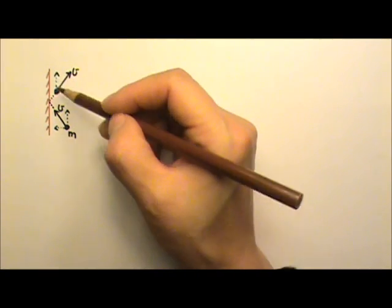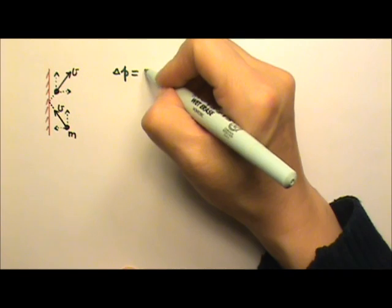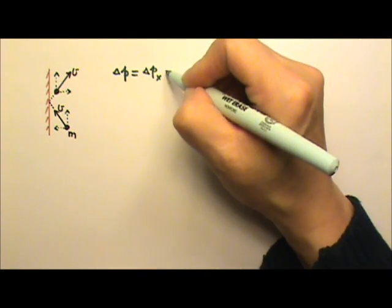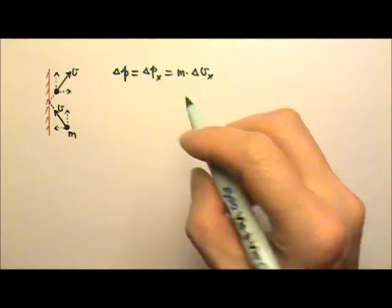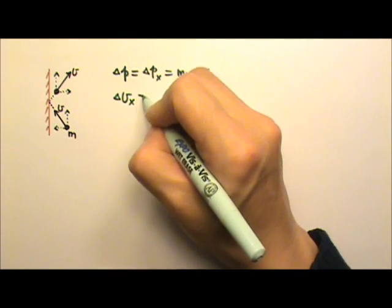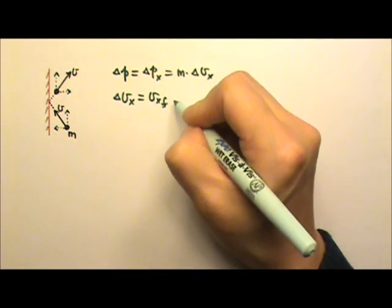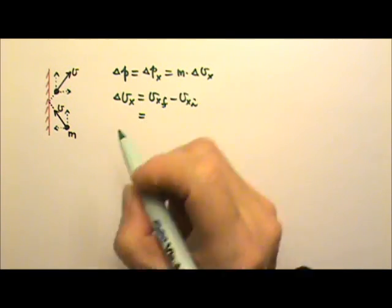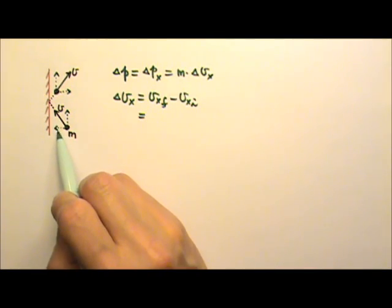There's no momentum change in the y direction. So the changing momentum of the molecule is the changing momentum in the x direction, which is m times delta v's x component. And the changing velocity in the x direction would be vx final minus vx initial. If we say the x component is just vx,